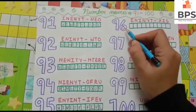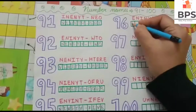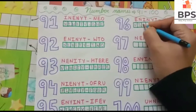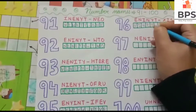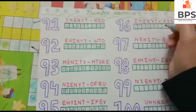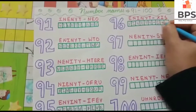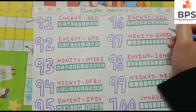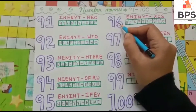N-I-N-E-T-Y, 90, F-I-V-E, 5, 95. Then 6, 96 — N-I-N-E-T-Y, 90, S-I-X, 6, so 96.